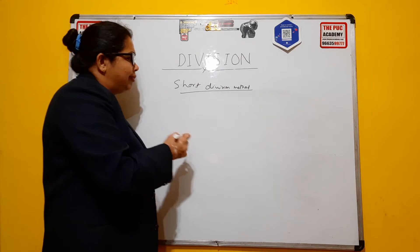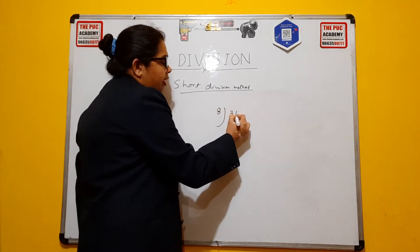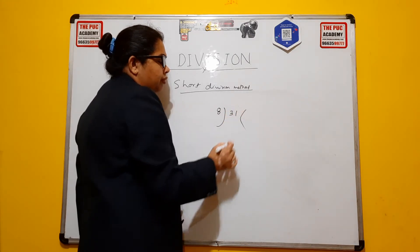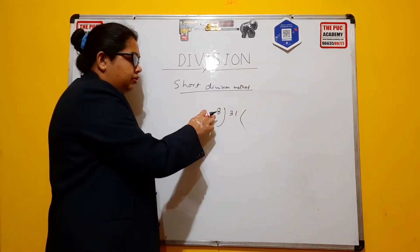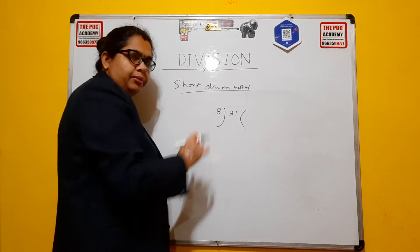In this, we will take an example like 8 divided by 31. So this is your divisor, dividend. Here you will get quotient and remainder.